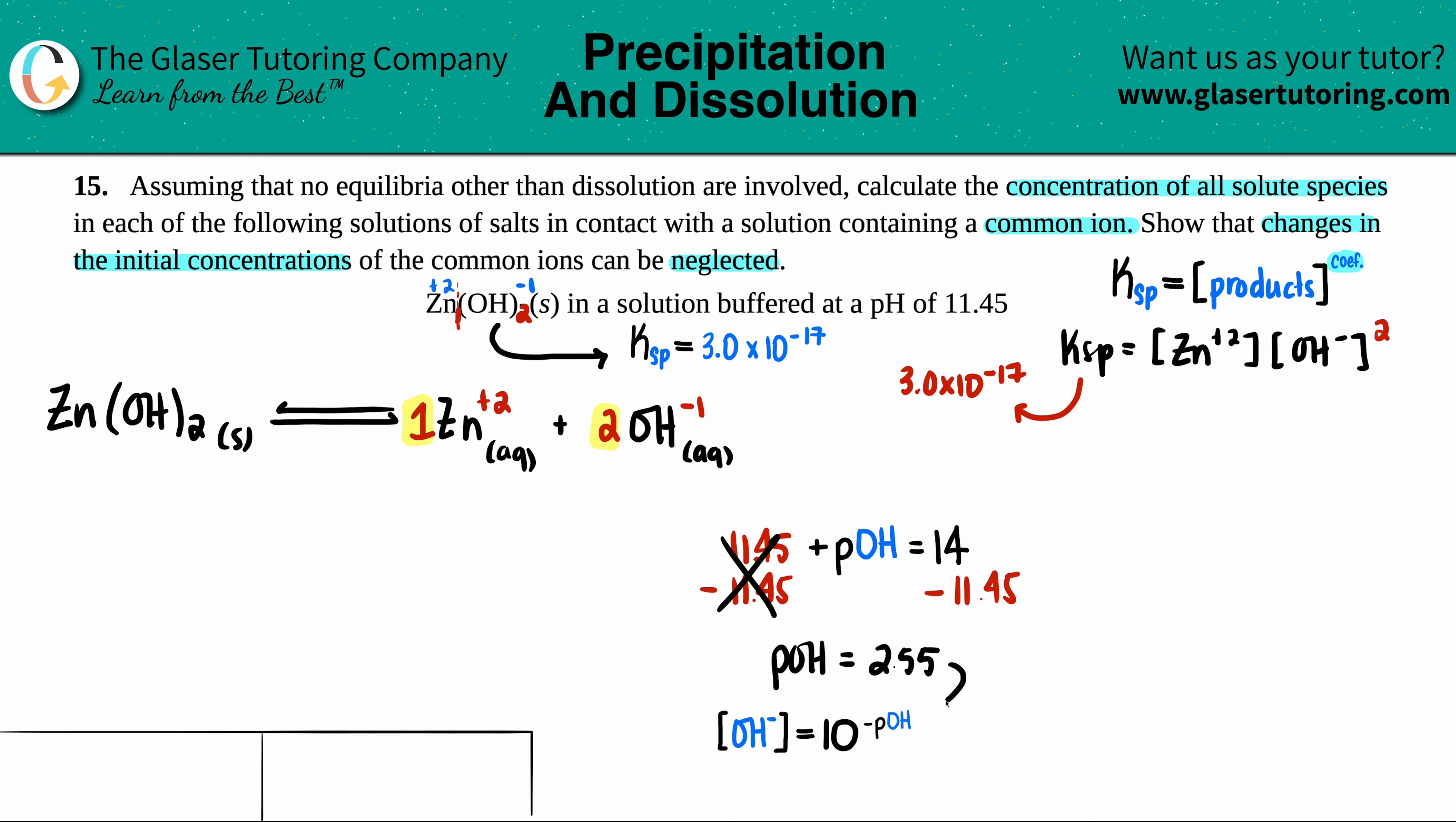Now let's convert to the OH minus. The OH minus concentration is 10 to the negative pOH. So it's just going to be 10 to the negative 2.55. And I'll have the OH minus concentration. So 10 raised to the negative 2.55. I get 2.818 times 10 to the negative 3rd molarity.